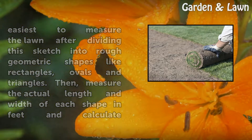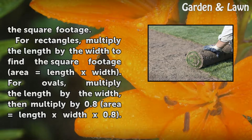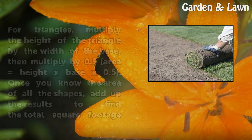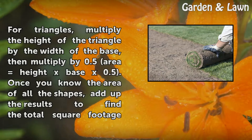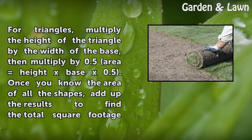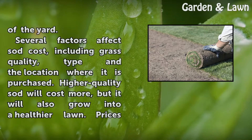Then, measure the actual length and width of each shape in feet and calculate the square footage. For rectangles, multiply the length by the width: area = length x width. For ovals, multiply the length by the width, then multiply by 0.8: area = length x width x 0.8. For triangles, multiply the height of the triangle by the width of the base, then multiply by 0.5: area = height x base x 0.5. Once you know the area of all the shapes, add up the results to find the total square footage of the yard.